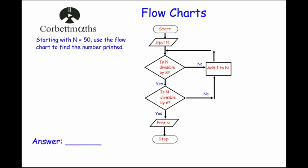Our second example: starting with n = 50, use the flowchart to find the number printed. Input n, so n is 50. Is n divisible by 8? 50 is not divisible by 8, so we go right and add 1 to n. We keep adding 1 — 51 is not divisible by 8, 52 is not, 53 is not, until we reach 56.